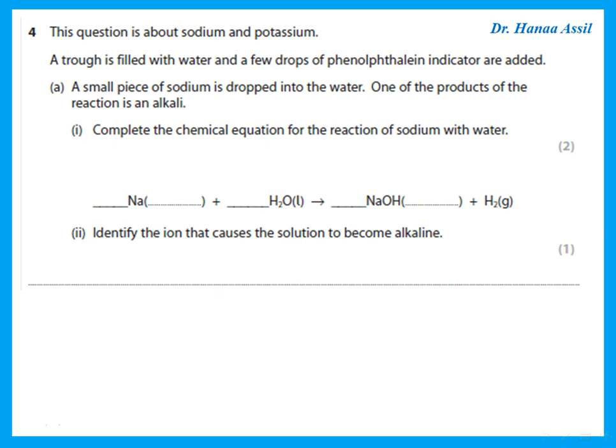This question is about sodium and potassium. A trough is filled with water with phenolphthalein indicator added, and a small piece of sodium is dropped in. To complete the equation for sodium reacting with water, we need state symbols and balancing: sodium is a solid, water is liquid, sodium hydroxide is aqueous, and hydrogen gas is produced. The ion that causes the solution to become alkaline is OH⁻, the hydroxide ion.